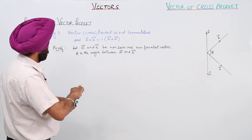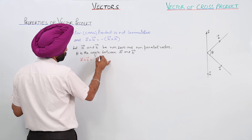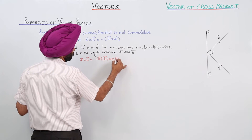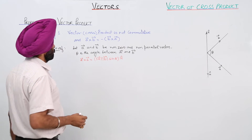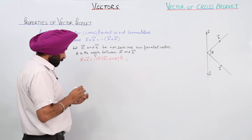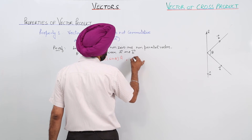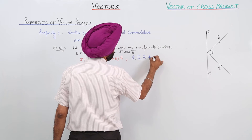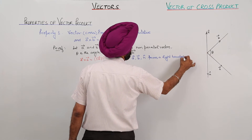Now, vector A × vector B is equal to magnitude of A, magnitude of B, sin theta, with n̂. Here, n̂ is a unit vector, and vector A, vector B, and n̂ form a right-handed system.